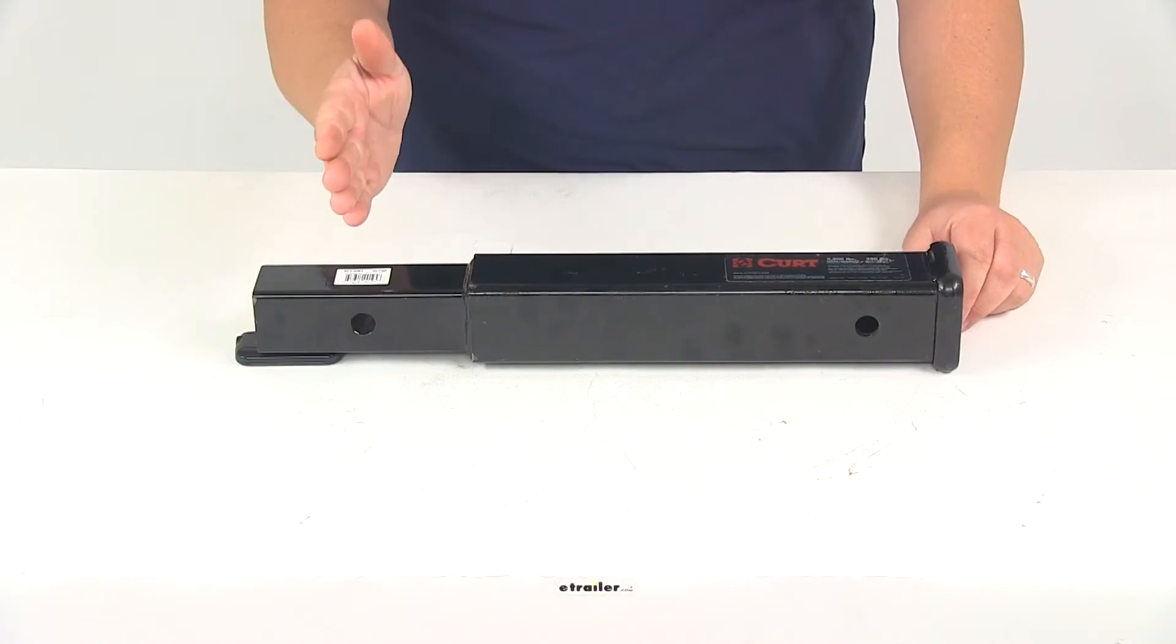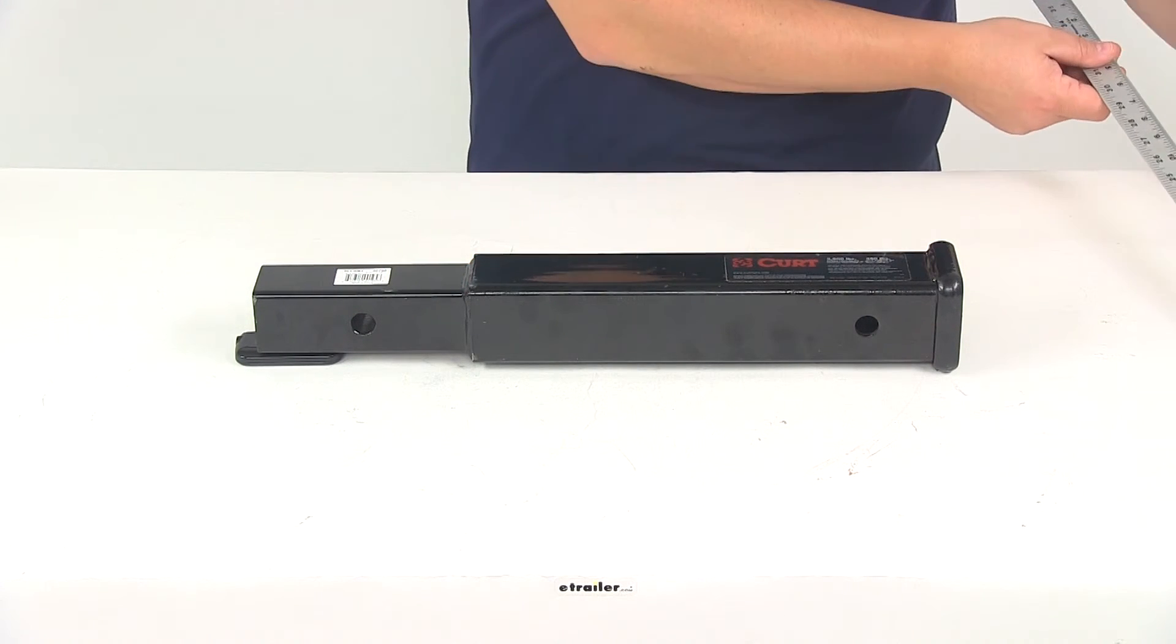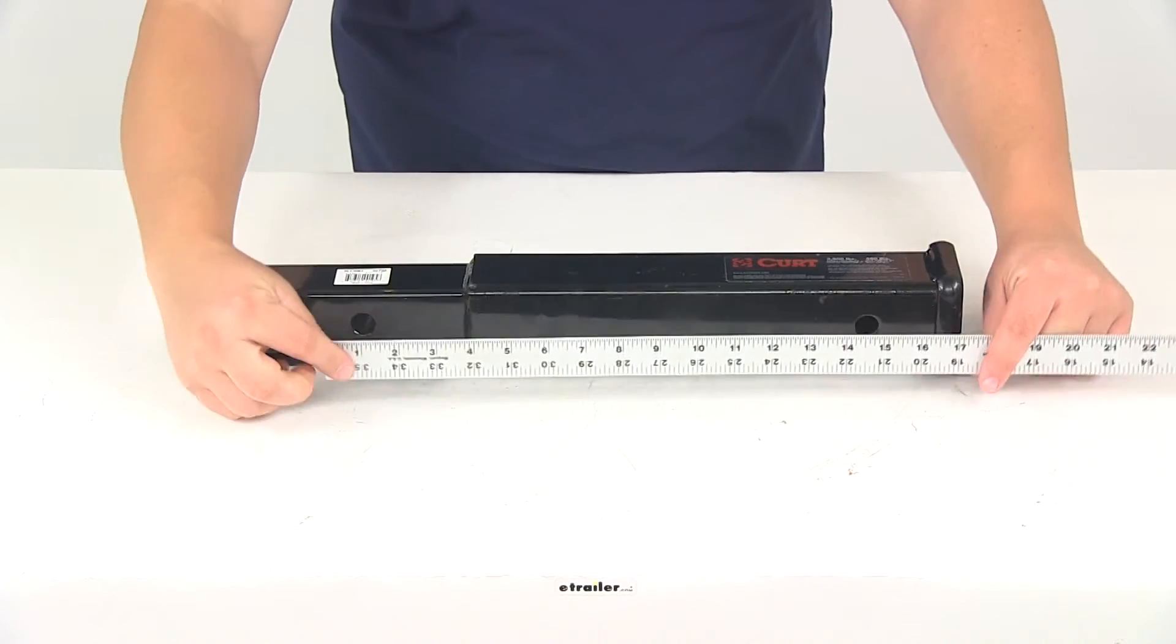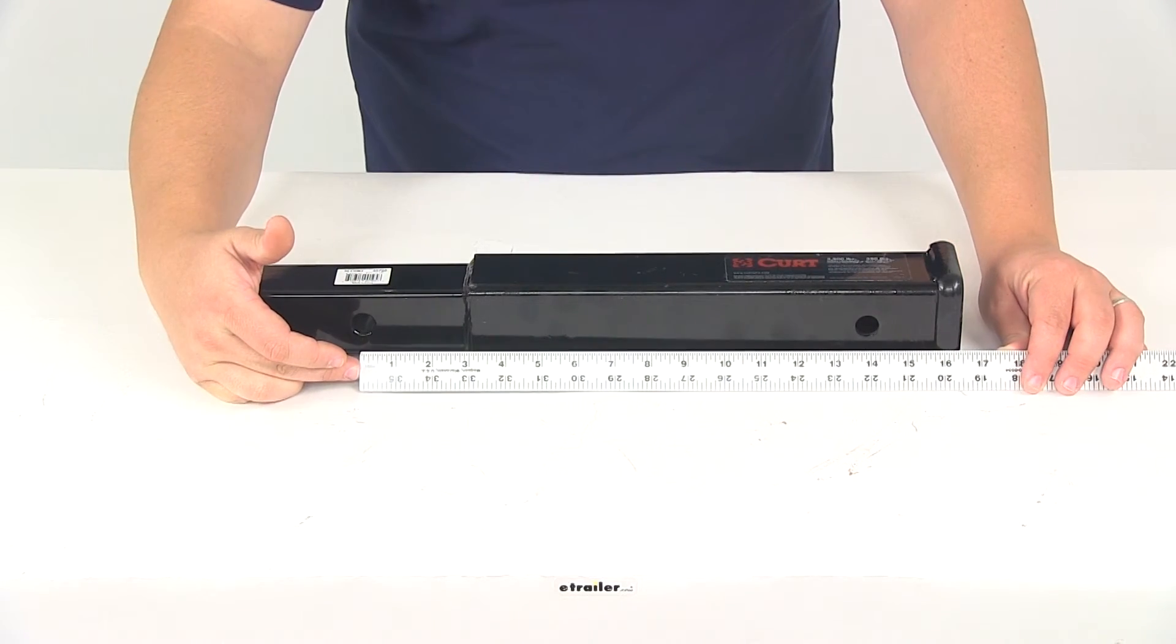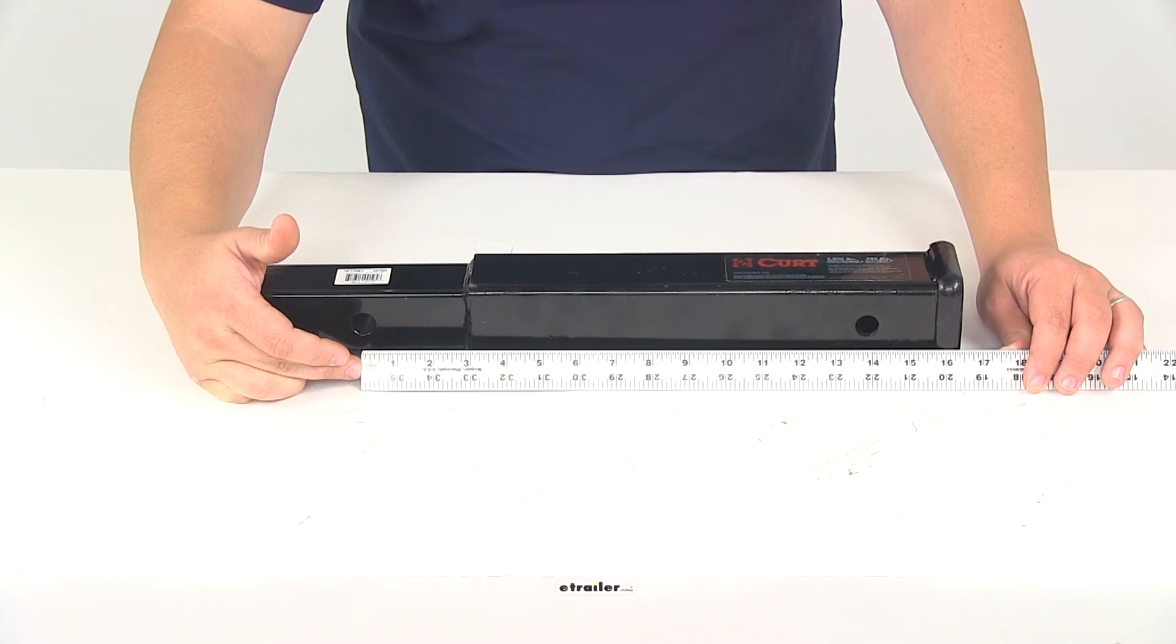The distance from the center of the hitch pinhole to the center of the receiver pinhole, this is how far it's going to move out from our vehicle. That's going to give us a measurement of about 14 inches. The exact measurement is 13 and 13 sixteenths of an inch.